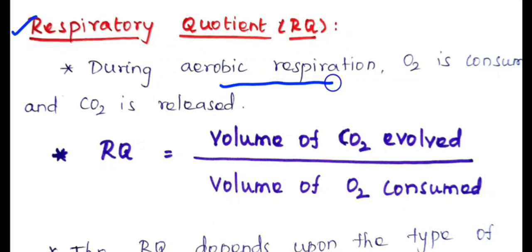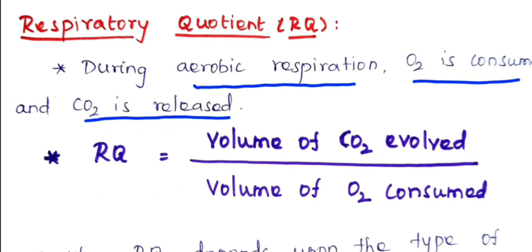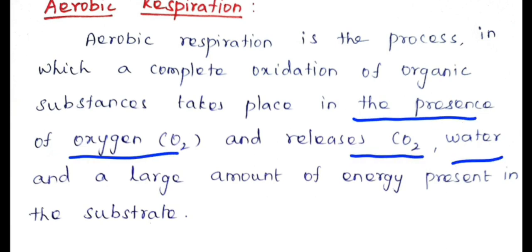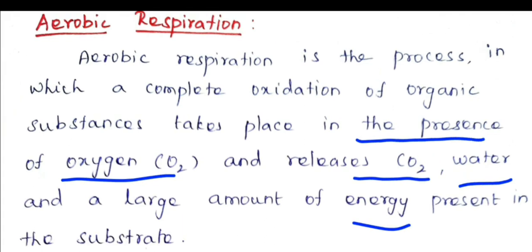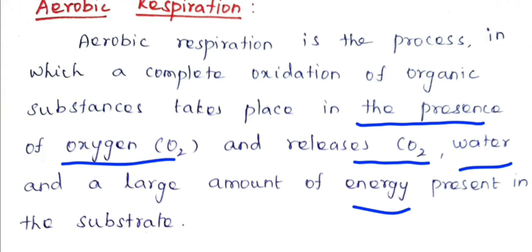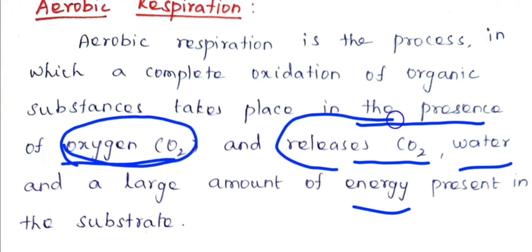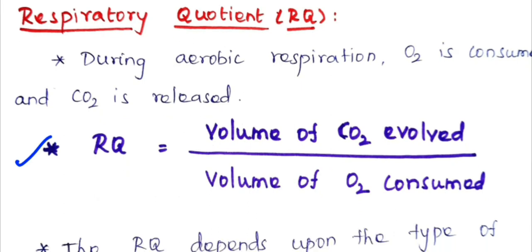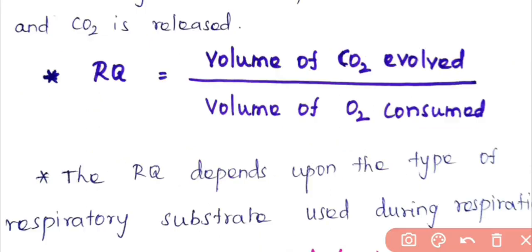During aerobic respiration, oxygen is consumed and carbon dioxide is released. Oxidation takes place in the presence of oxygen and releases carbon dioxide, water, and energy. For calculating the respiratory quotient, we take only the consumption of oxygen and the amount of carbon dioxide released during the reaction. The respiratory quotient (RQ) is equal to the volume of carbon dioxide evolved divided by the volume of oxygen consumed. This is also known as the respiratory ratio.